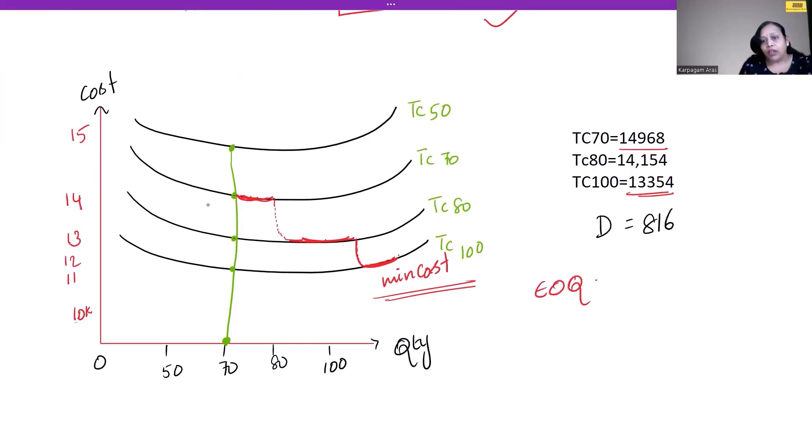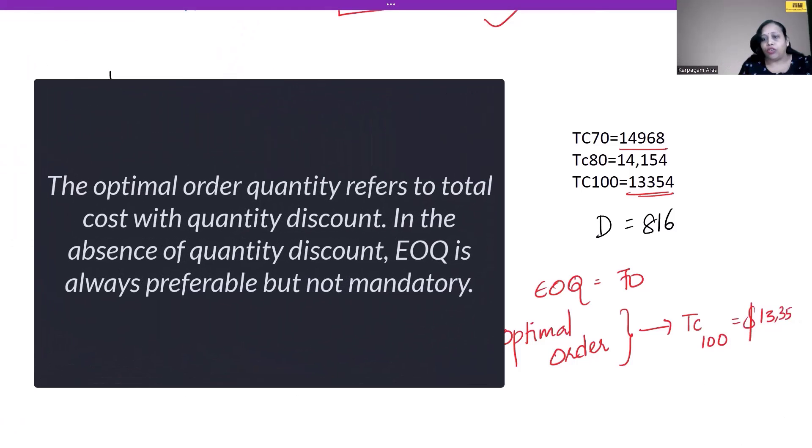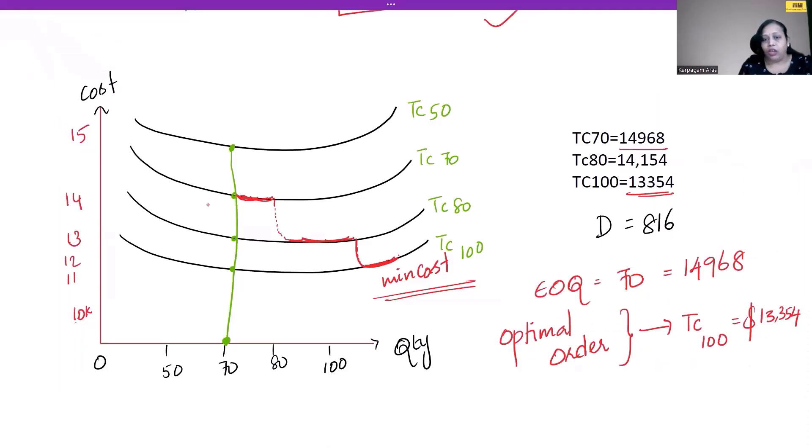Our economic order quantity is 70 units, but our optimal order, if we want to consider the quantity discount and place accordingly, then the optimal order stands where total cost is least—at 100 units. So we should order 100 units, which will cost us 13,354, whereas EOQ at 70 will give us 14,968. So we will opt for the optimal order quantity against the economic order quantity.